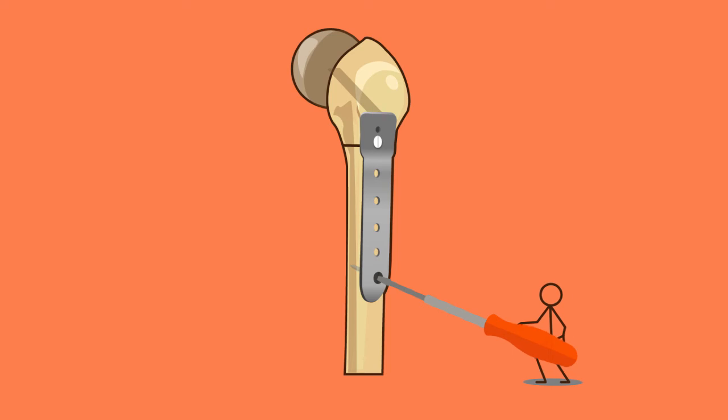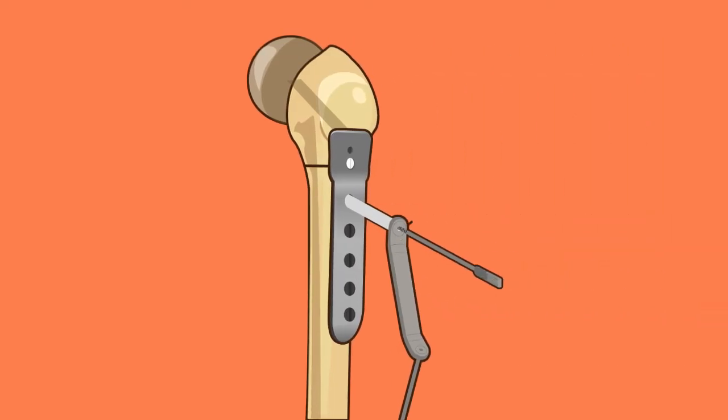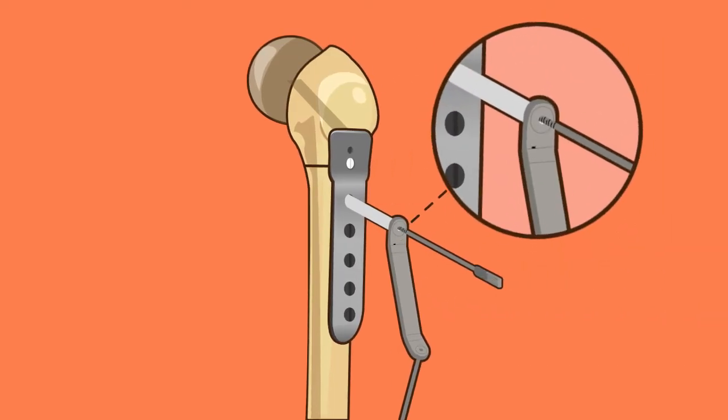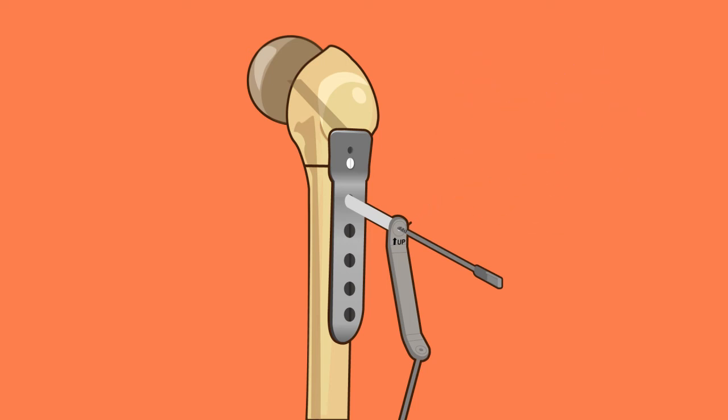Step 12: osteotomy compression, optional. When compression of the two segments is desired, the compression sleeve can be used with the up arrow pointing towards the blade. Drill through both cortices and note the screw length required. This will achieve one millimeter of compression across the osteotomy.